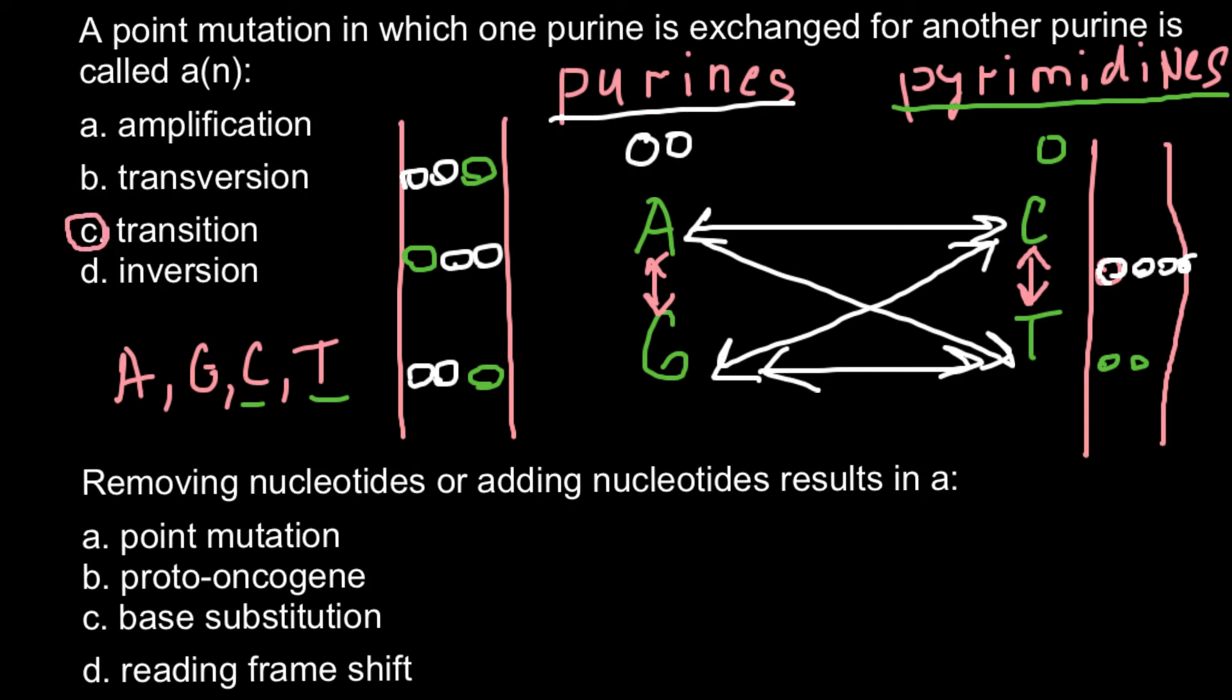And next question. Removing nucleotides or adding nucleotides results in, and here are four answers. Answer A: point mutation. Answer B: proto-oncogene. Answer C: base substitution. Answer D: reading frame shift.